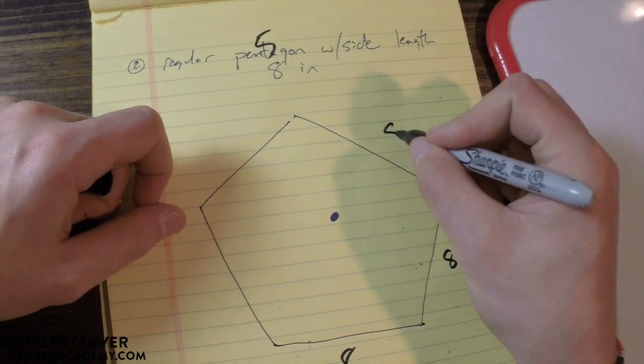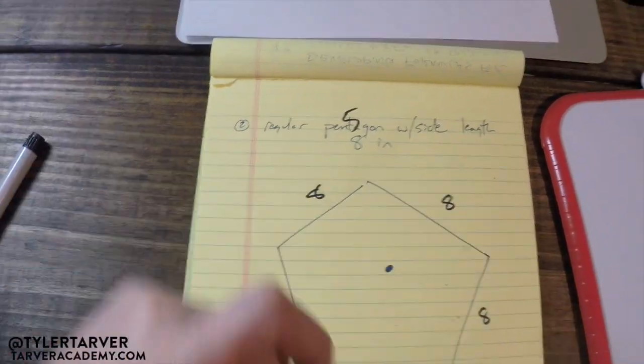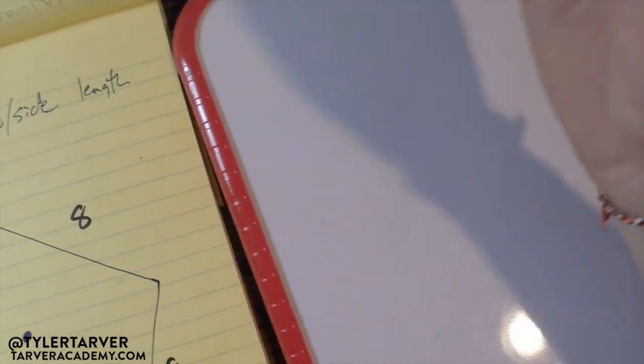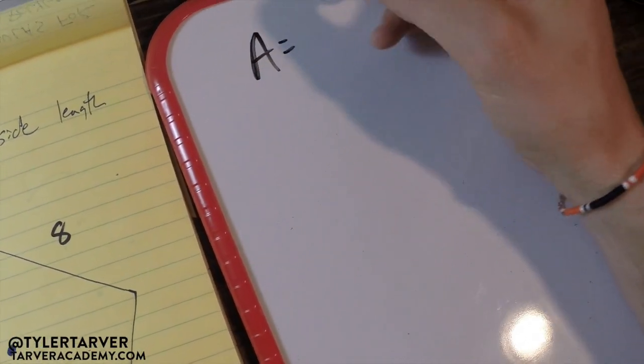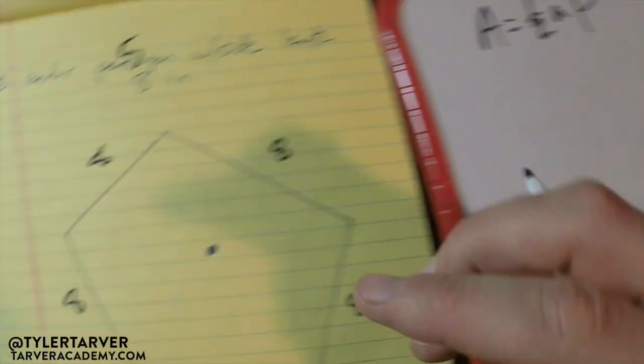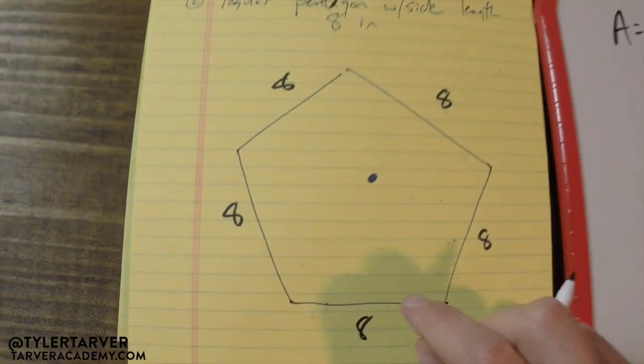Therefore we know this is 8, 8, 8, 8, 8. We know the formula for area of a regular pentagon: area equals one-half the apothem times the perimeter. Do I have any of that right now? Why yes I do.